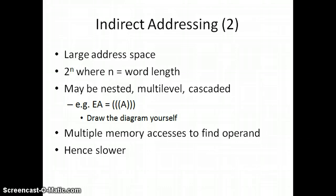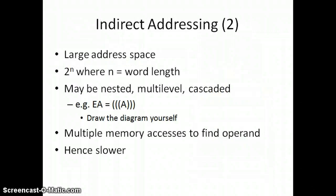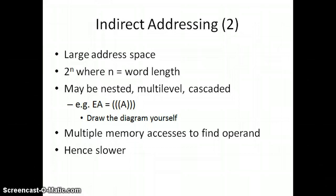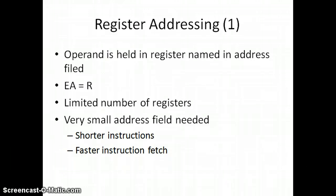Compared to direct addressing mode, indirect addressing mode is a little bit slower. While designing a processor or microprocessor, indirect addressing mode is not mostly used as it is much slower, making multiple memory accesses to find an operand. If a memory operand fails to access some data, execution of the instruction cannot be completed. With this, we can say that indirect addressing mode is more complex than the direct addressing mode.